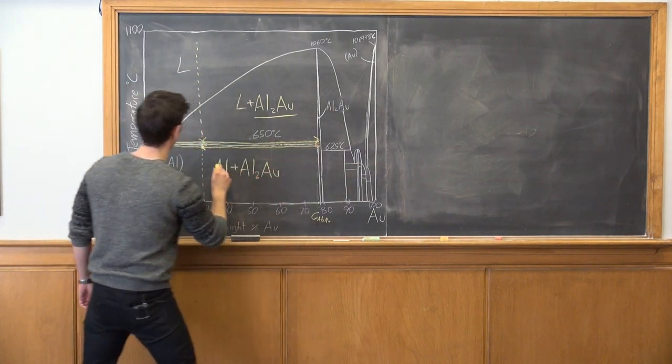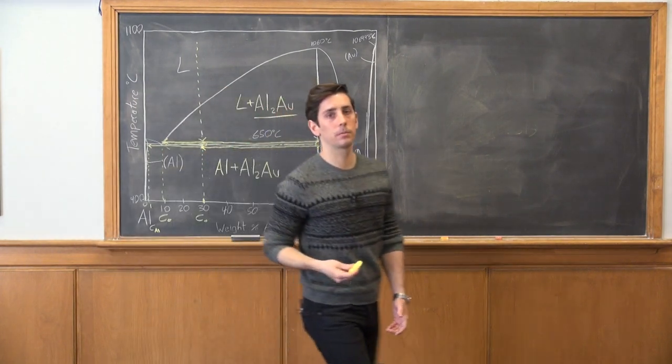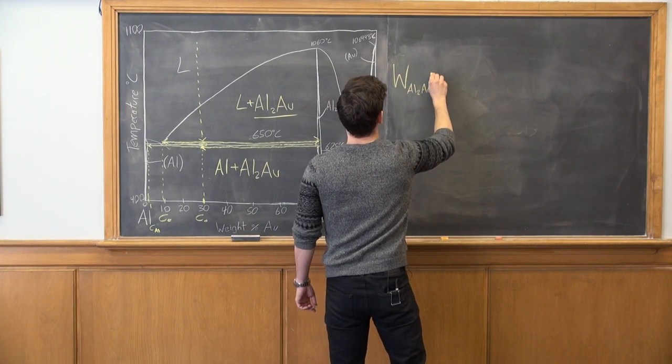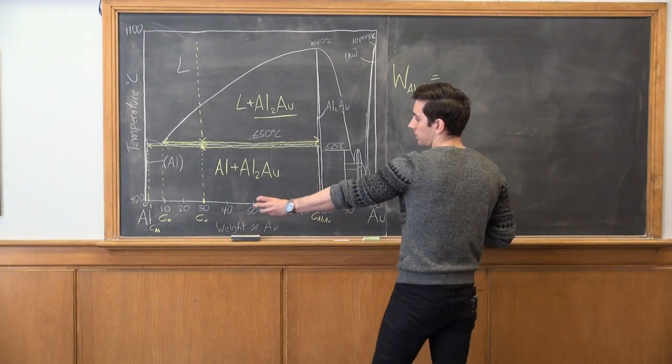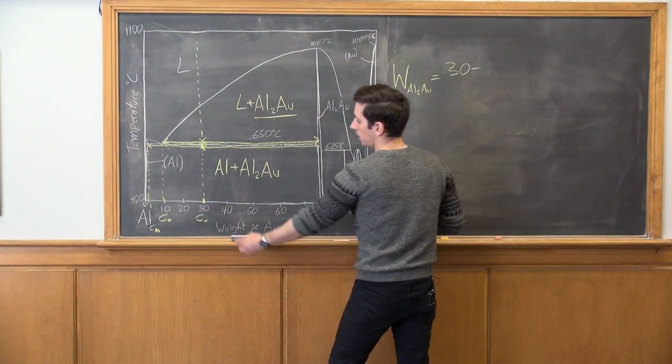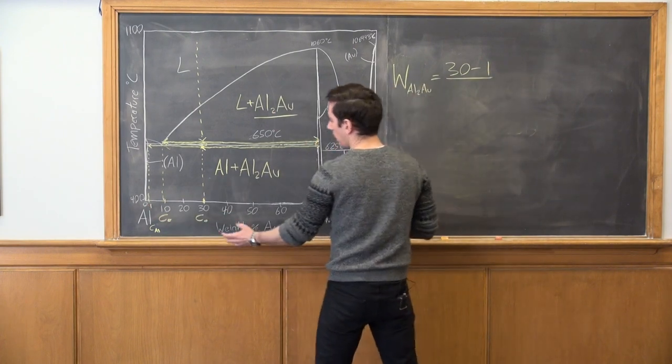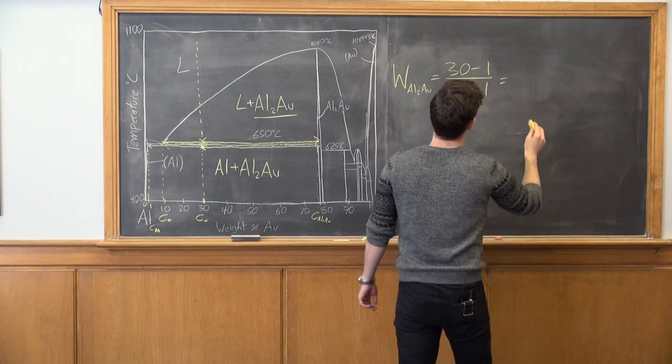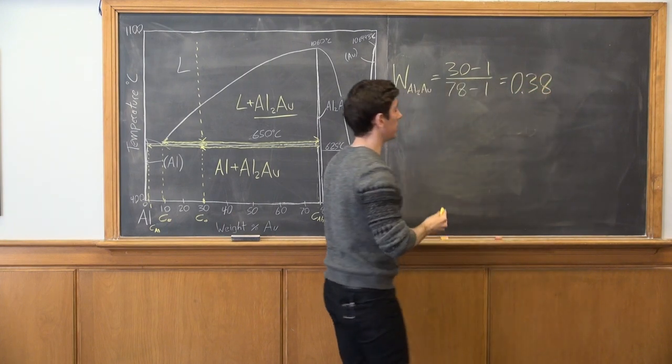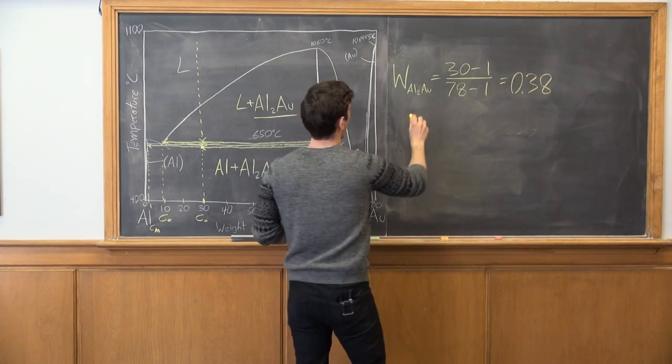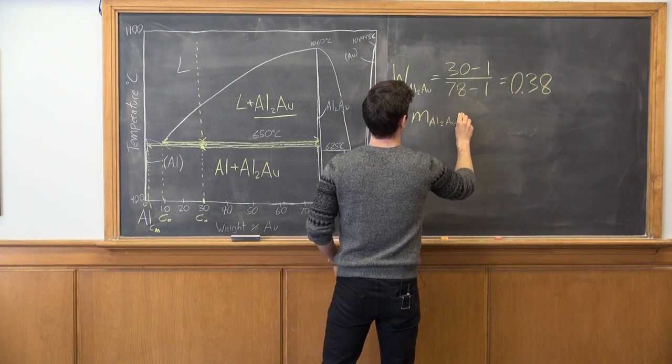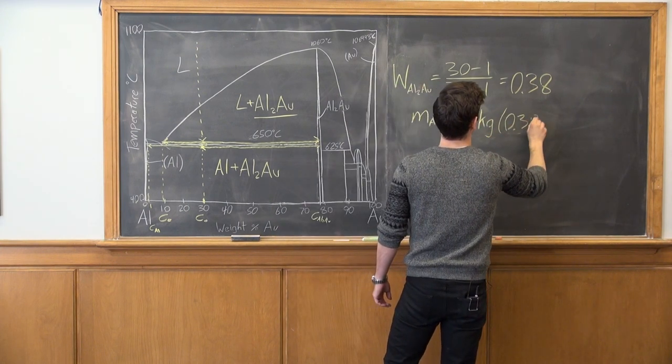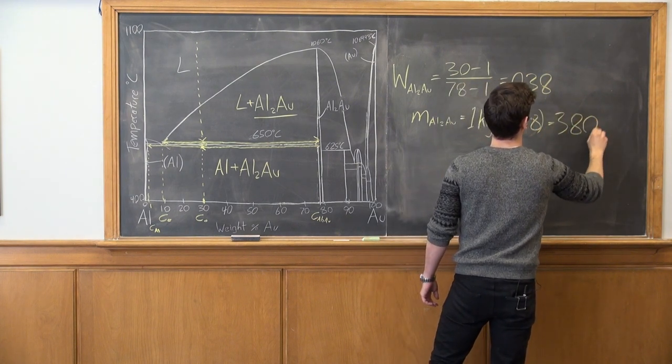So we see again this intersects the aluminum to gold transition here at 78%. And this looks like about 1%. We'll call this C aluminum. So then once again we apply the lever rule to determine the fractional amount of aluminum to gold we have, relative to the aluminum. And so this is going to be 30 minus 1 divided by 78 minus 1. And this is equal to 0.38. So once again we're looking for the mass. So the mass of the aluminum to gold is going to be equal to 1 kilogram times this fraction, 0.38, which is equal to 380 grams.